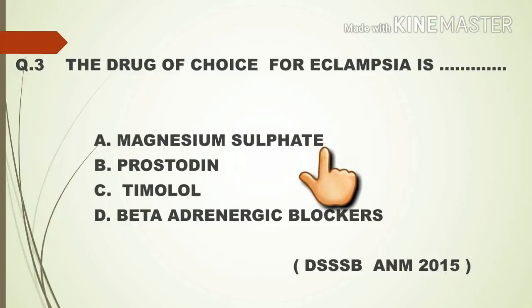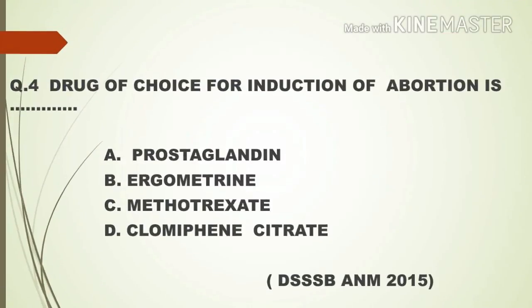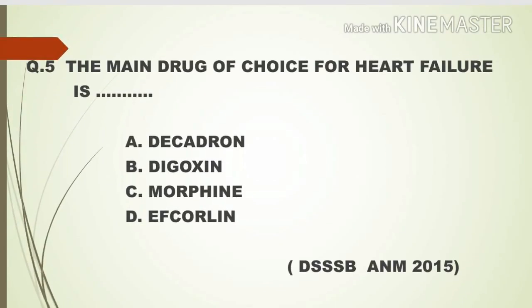Option A, magnesium sulfate, is the right answer. Fourth question: drug of choice for induction of abortion is — a) prostaglandin, b) ergometrine, c) methotrexate, d) clomiphene citrate. Option A, prostaglandin, is the right answer. Fifth question: the main drug of choice for heart failure is — a) dexamethasone, b) digoxin, c) morphine, d) folic acid.